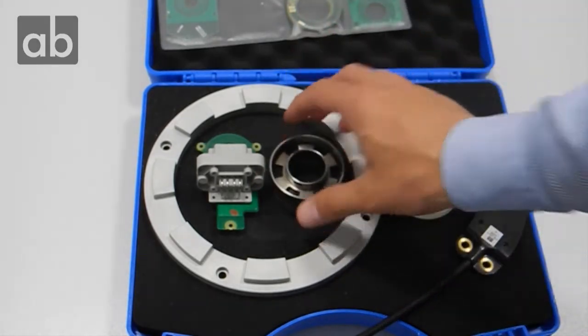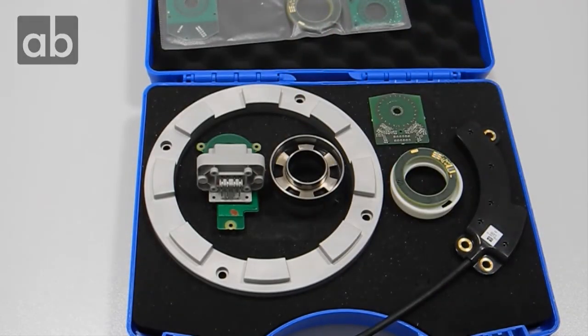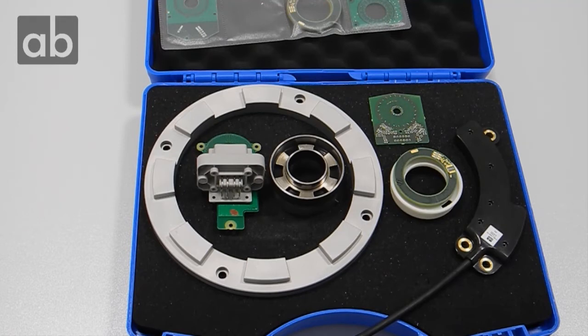If this kind of bearing is mounted onto the rotor shaft of any system, it is possible to sense the exact rotor position while also fulfilling the general task of being a bearing. This, of course, offers great advantages concerning the installation space and the number of individual parts in an electric motor since they can be reduced significantly.